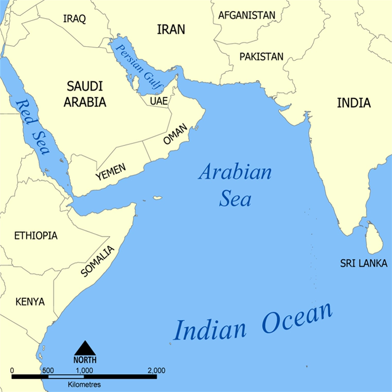== Terminology == World Ocean – the single connected salty body of water that covers the majority of Earth's surface. Ocean – the four to seven largest named bodies of water in the World Ocean, all of which have 'ocean' in the name. See borders of the oceans for details.